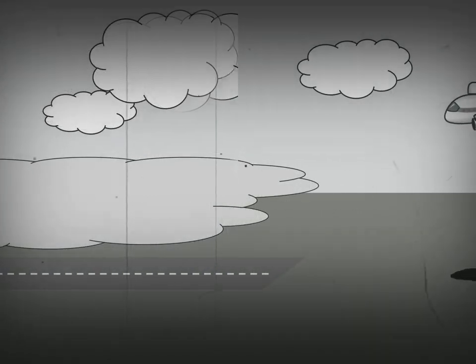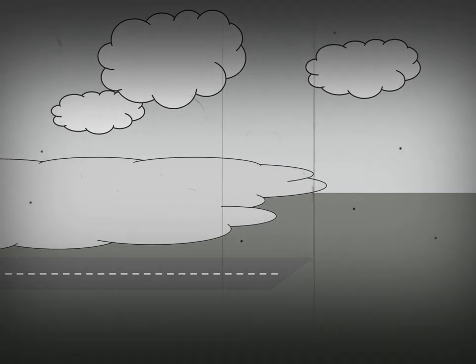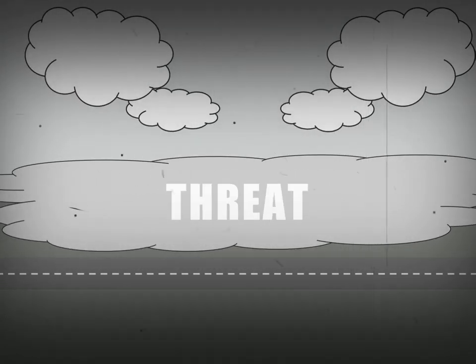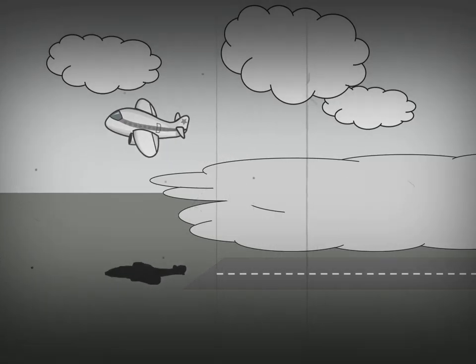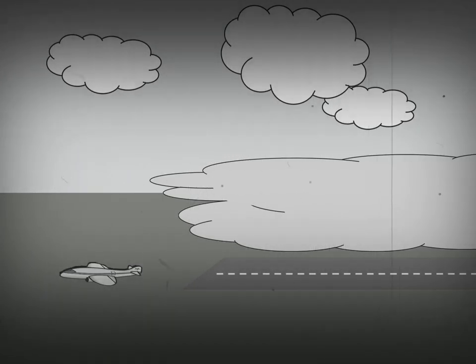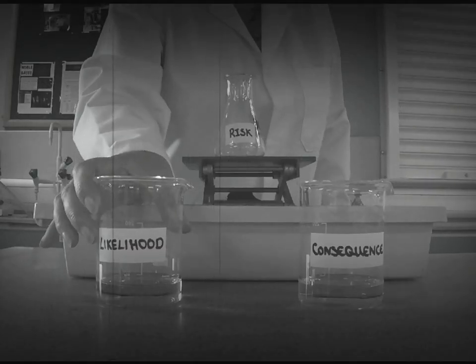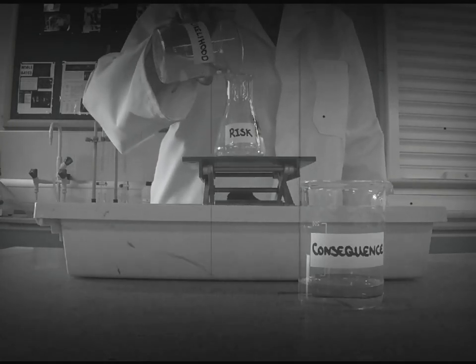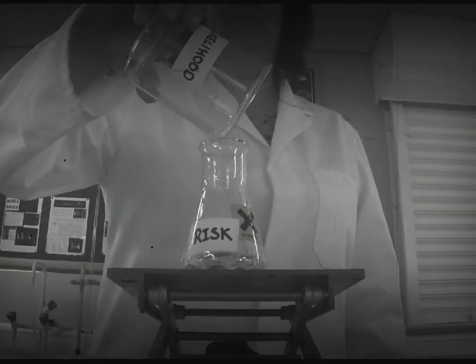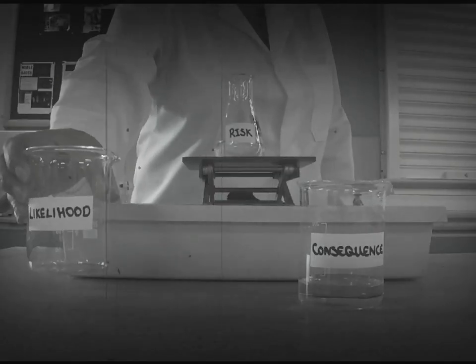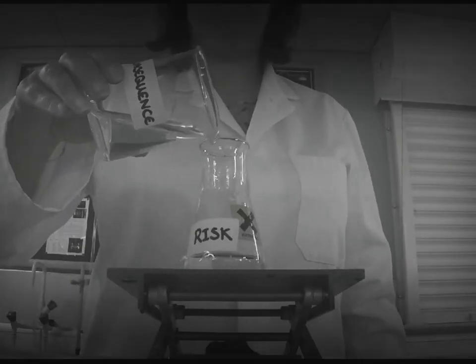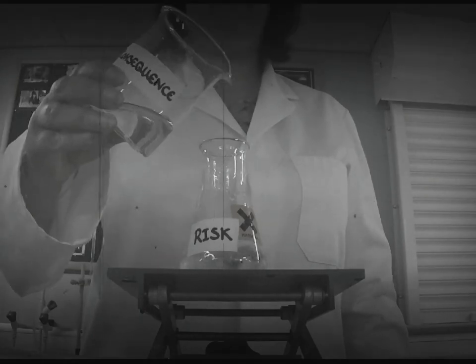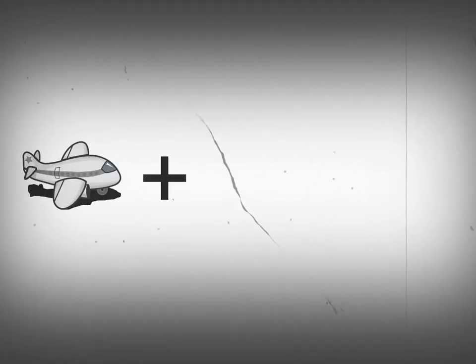Adverse weather poses a threat. The risk here is posed by using more fuel. Since the weather cannot be controlled, our plan cannot change the likelihood of using more fuel. We must instead reduce the consequences. The consequences of using more fuel can be reduced by having more fuel onboard in the first place.